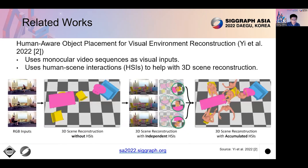There are other works that try to use human contact information to reconstruct scenes. For example, in Human Aware Object Placement for Visual Environment Reconstruction, the authors use videos as visual inputs and use human scene interactions to help with the 3D scene reconstruction. While such a method produces physically plausible reconstructions, it requires additional visual inputs so that the reconstructed scenes are restricted.